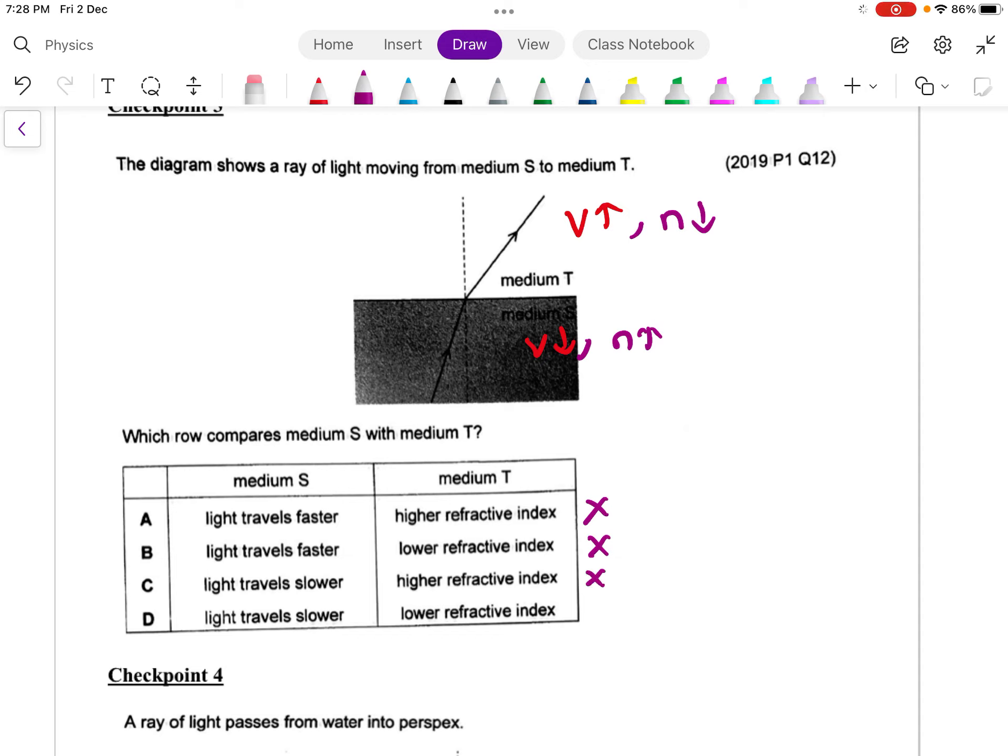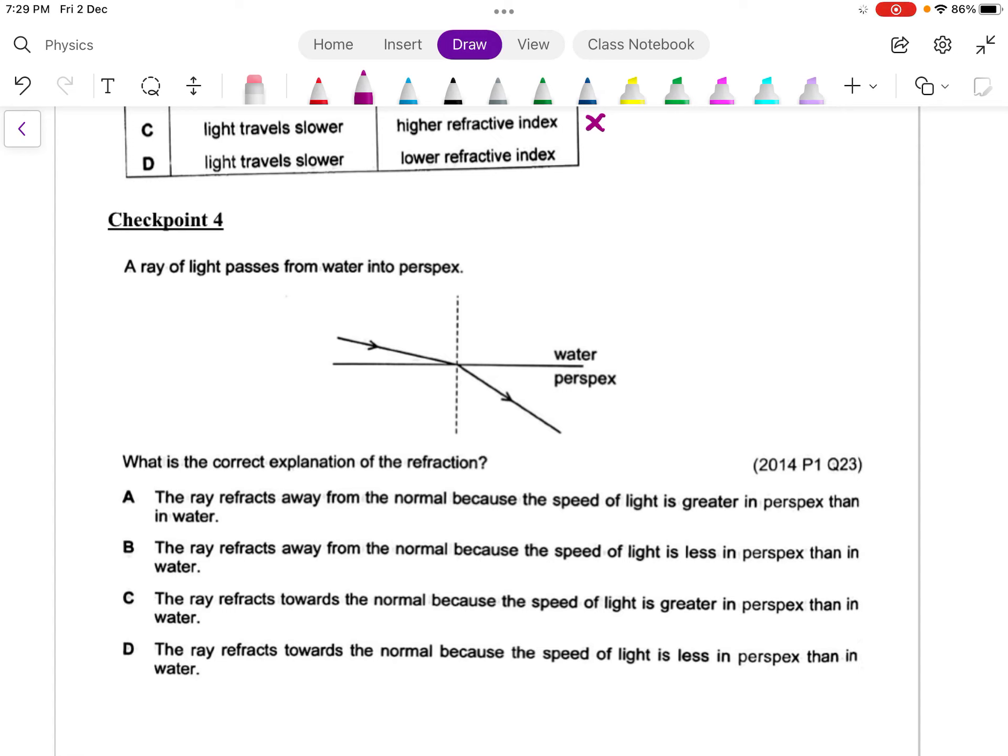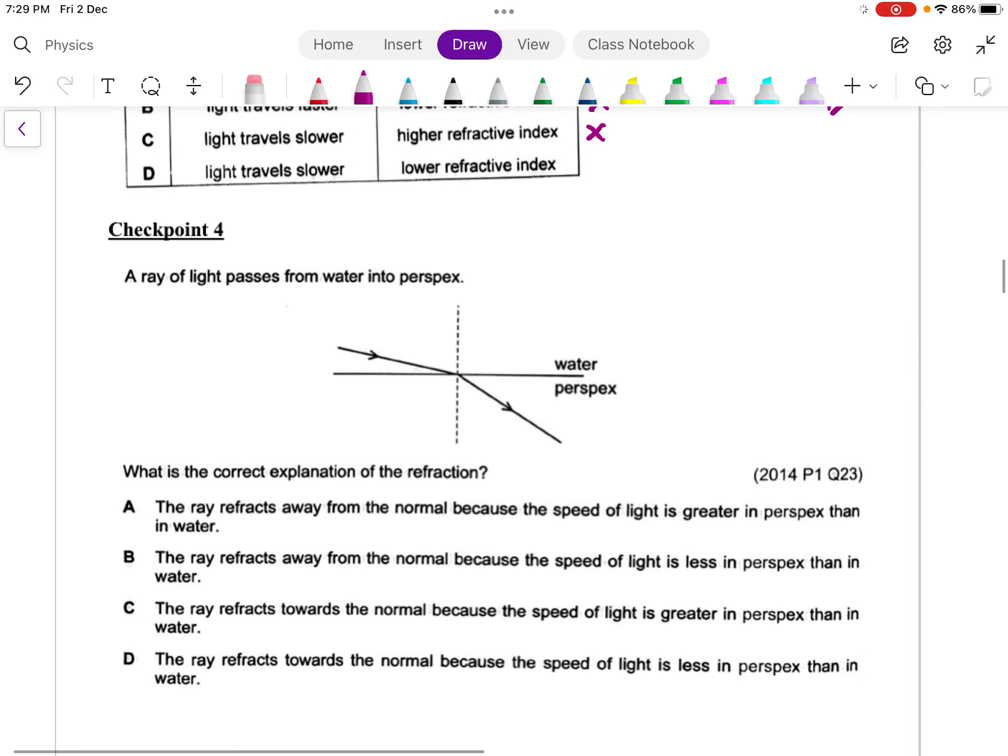Checkpoint number 4: A ray of light passes from water into perspex. Perspex is just something like a plastic, a very special form of plastic. So this is the correct explanation of the refraction. You can see the light in water is quite far away from normal. When you go into the perspex, you actually bend toward the normal. This tells me that the speed of light in water is greater, then the speed of light in perspex should be smaller.